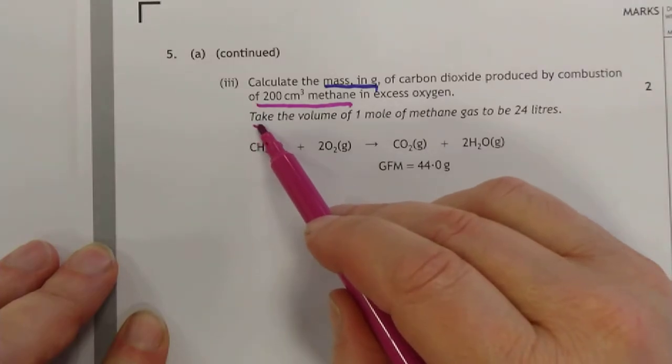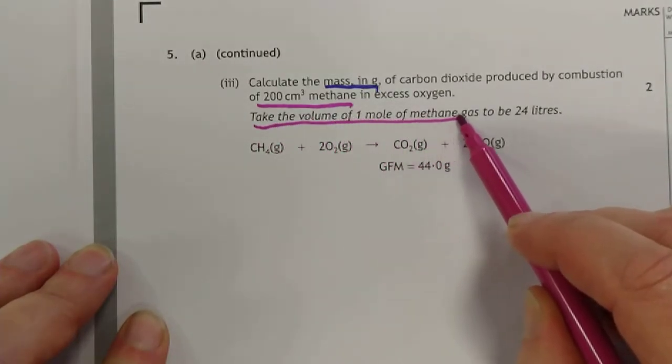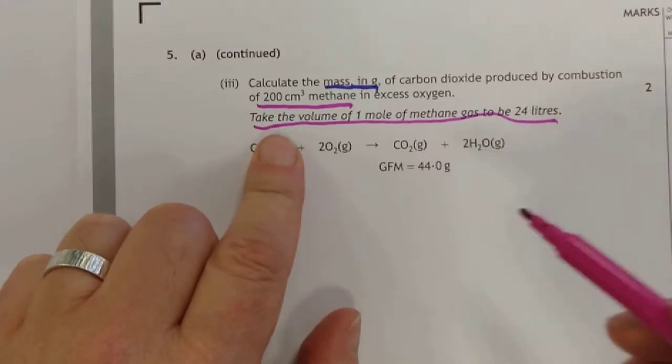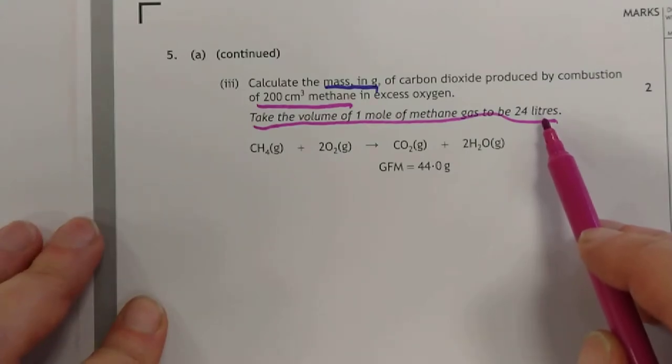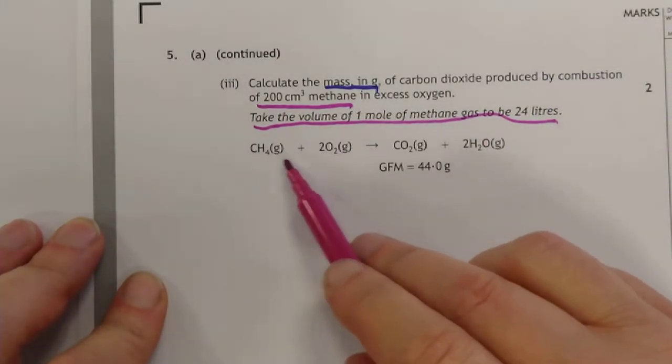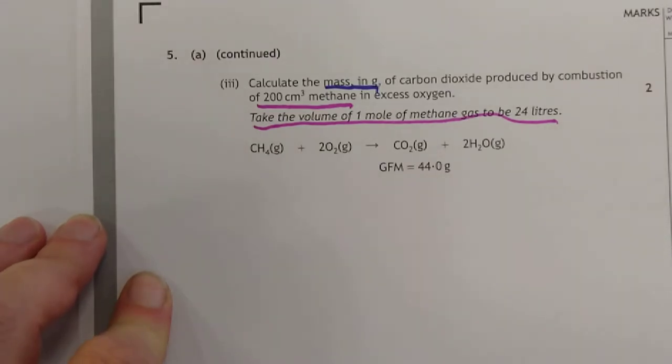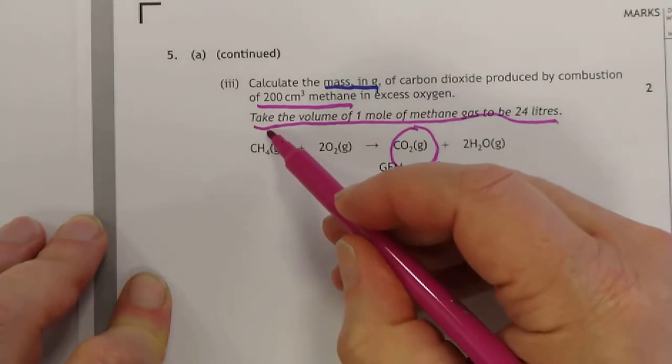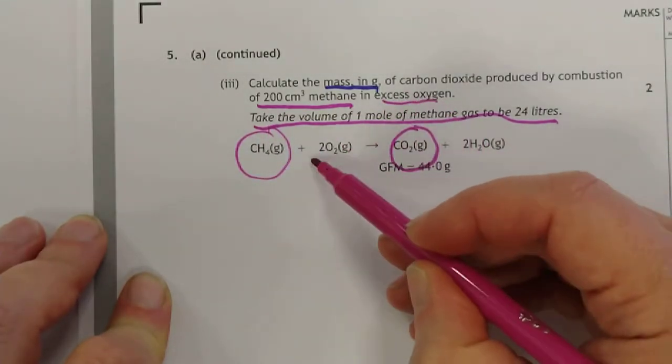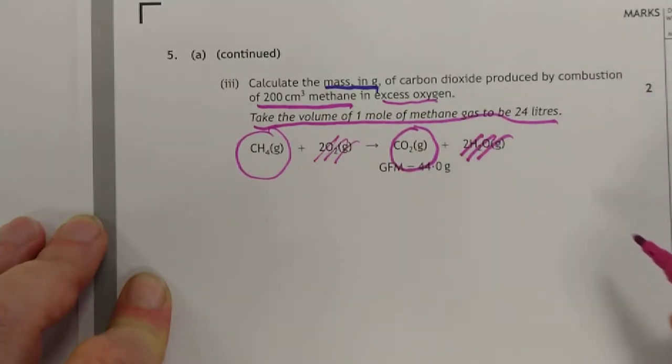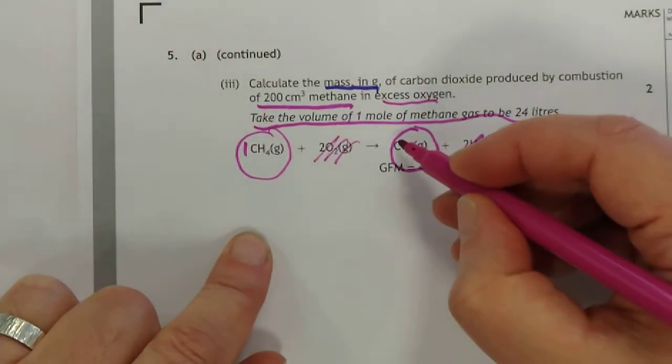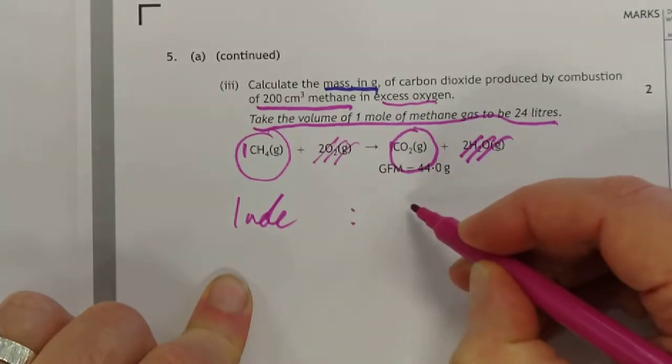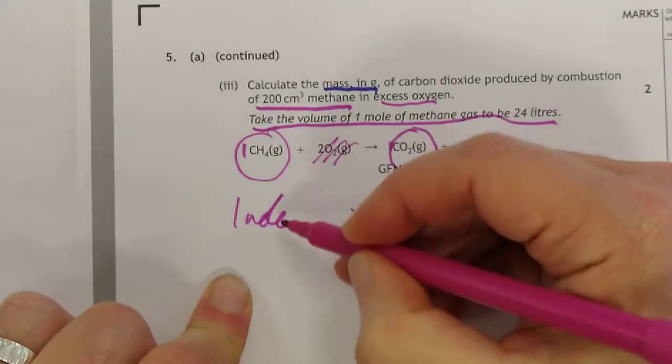They have very kindly told us what the molar volume is, though typical SQA made it a little bit more difficult by not saying the molar volume is. It just says the volume of one mole of methane gas is 24. We're only interested in two things out of this calculation, and we can ditch the rest. We're only interested in CO2, and we're only interested in methane. Excess oxygen means we can discard this.